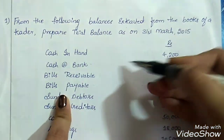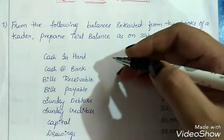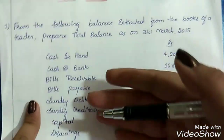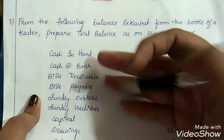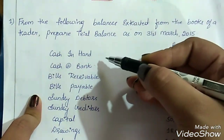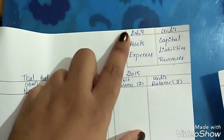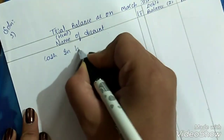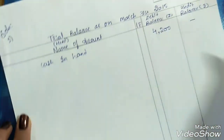The first entry is cash in hand, Rs. 4,200. Cash is our current asset, so this needs to be recorded on the debit side. In the particulars column, mention cash in hand, and in the debit amount column, Rs. 4,200. Remember, in trial balance you need to know the meaning of all these terms — until and unless you know their meaning, you won't be able to decide if they are assets, liabilities, expenses, or revenues.